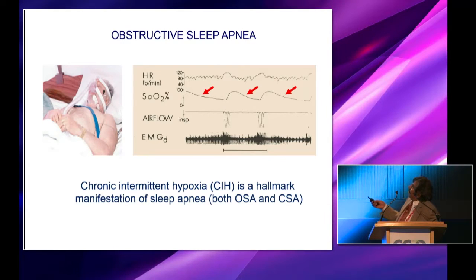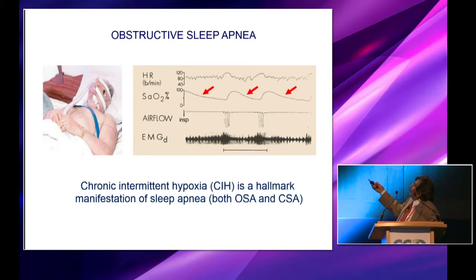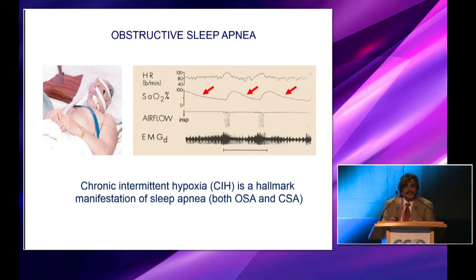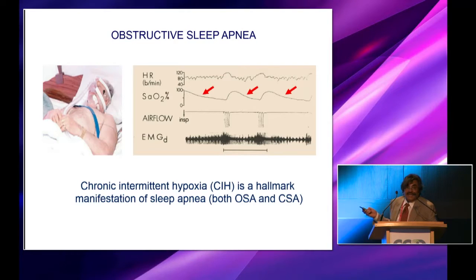Here is an example of a person having obstructive sleep apnea. During obstruction of the upper airway, there is no airflow, although the central rhythm continues. As a consequence of cessation of airflow, arterial blood saturation drops. The person wakes up, saturation improves, then goes back into apnea and saturation drops again. In other words, this periodic cessation of breathing is reflected in chronic intermittent hypoxia, which is the hallmark manifestation of sleep apnea syndrome.